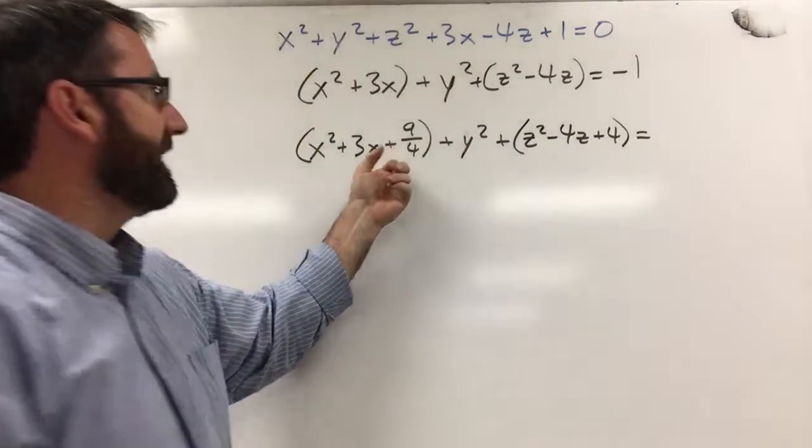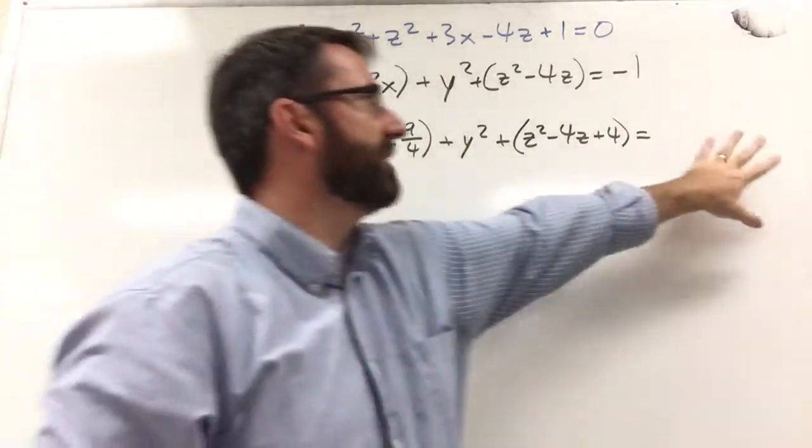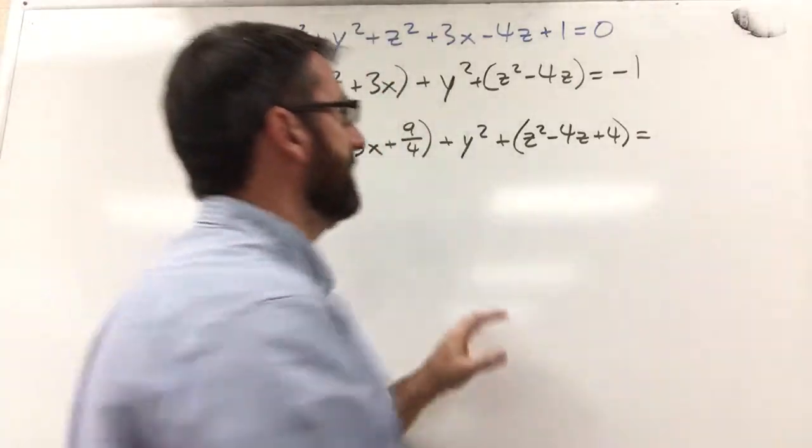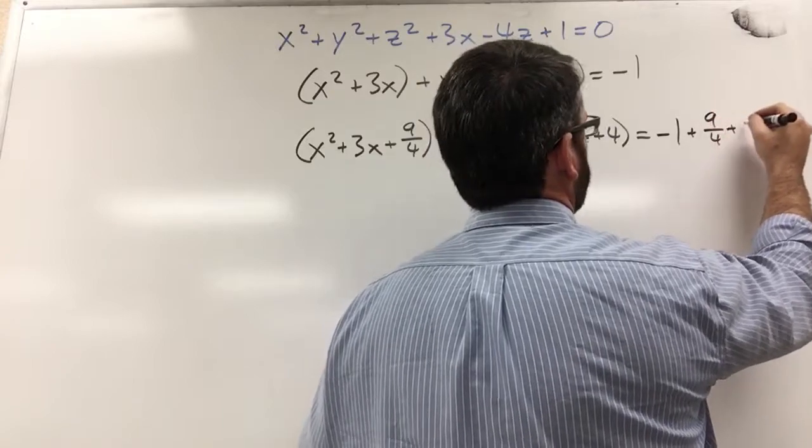Now we've added 9 fourths and 4 here. So if we do that, we've got to also do it to the other side. So we've got negative 1 plus 9 fourths plus 4.